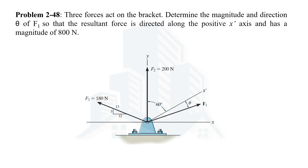Hello everyone. In this video we are going to solve problem number 48 from the second chapter of the Engineering Mechanics book, The Statics Part by R.C. Hibbeler. In this problem we have been given three forces which act on a bracket. We have been asked to determine the magnitude and direction of F1 force so that the resultant force is directed along the positive x-dash axis and has a magnitude of 800 Newton.